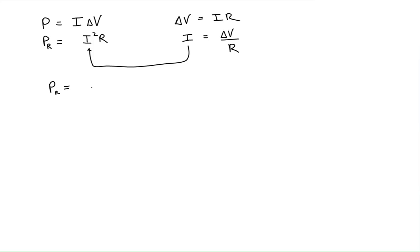This means that we could express power in terms of potential difference and resistance. So if I plug in that expression for current, I would get the potential difference over the resistance squared. This is what I plugged in for the current times the resistance.